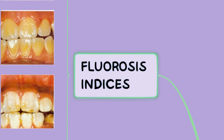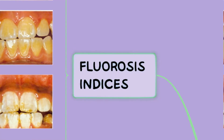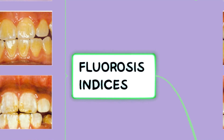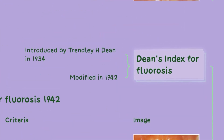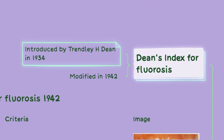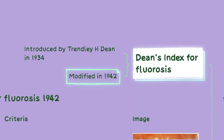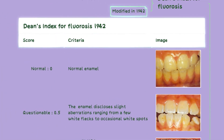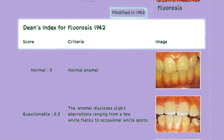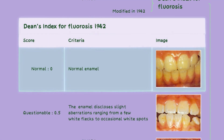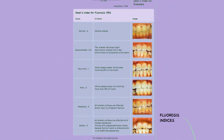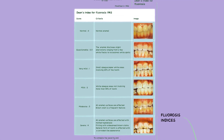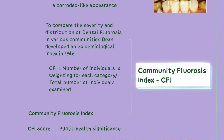Fluorosis indices are used to assess and classify the severity of dental fluorosis. The earliest was Dean's Index for fluorosis, introduced by Trendley H. Dean in 1934 and modified in 1942. It categorizes fluorosis into different scores ranging from 0, which is normal, to 4, which is severe. The scoring criteria can be seen in the table on the screen.